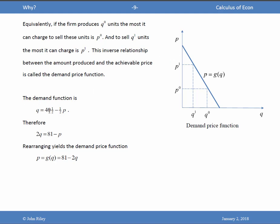Well, the demand function is Q = 40.5 - 0.5P. Very simple for any linear problem. 2Q equals 81 minus P. Rearrange P as a function of Q. It's P = 81 minus 2Q. This is called the demand price function.